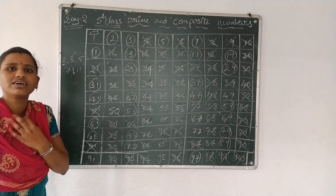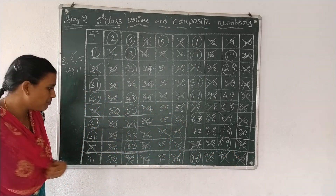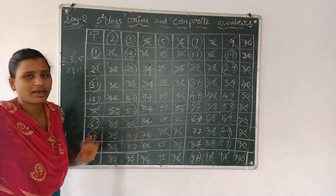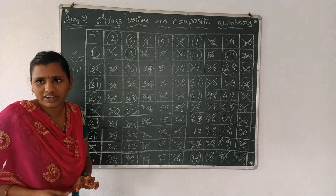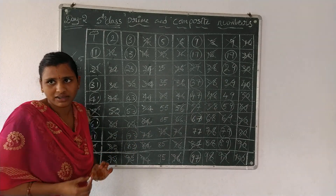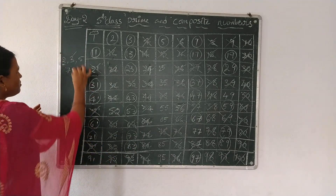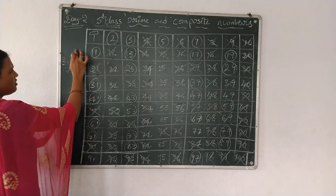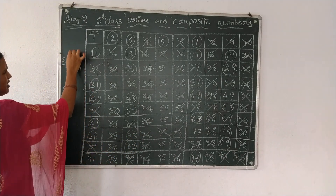These are the 3 table numbers up to 100. So the 3 table is also completed.